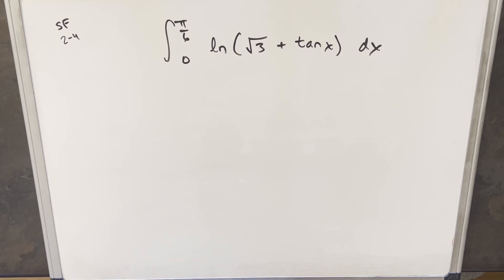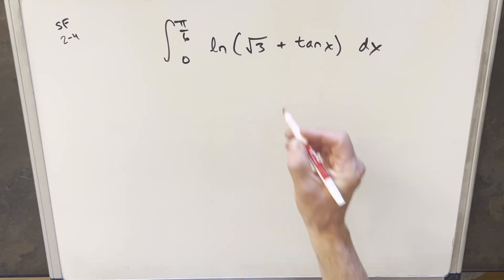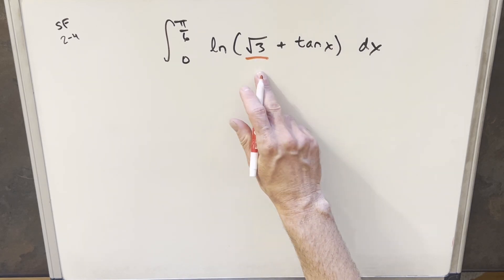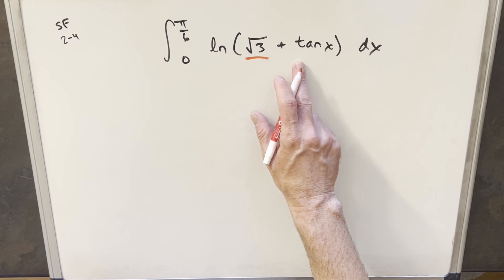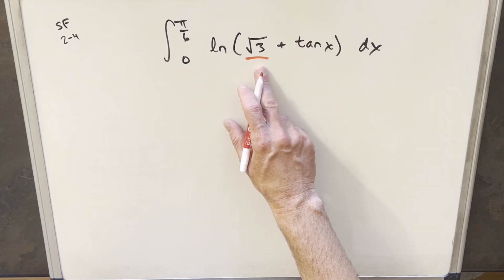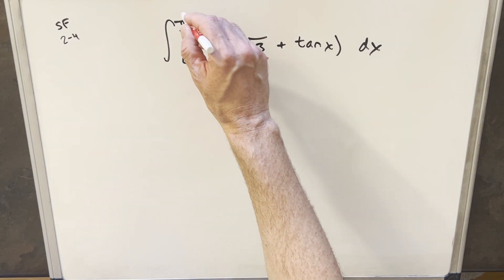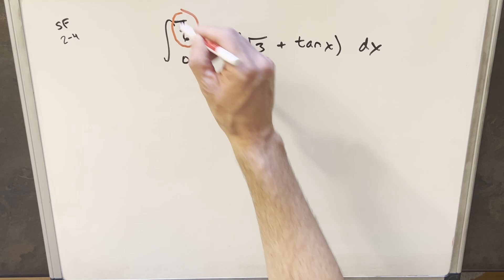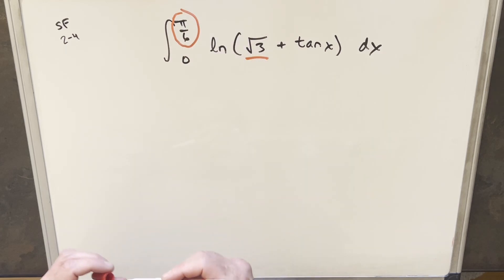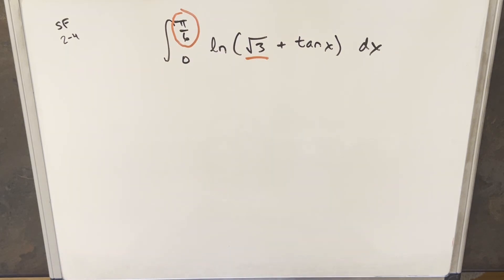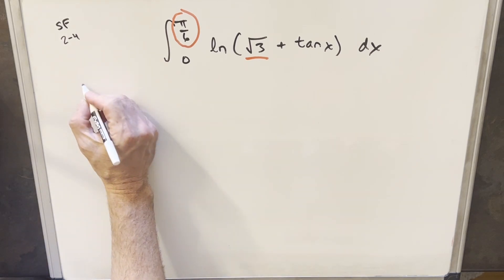The thing that really jumps out for me — I think I did a problem very similar to this a few months back. There are a few important differences: we have this square root of three here. Usually when you have a problem like this, it's just the trig function inside, not adding something else. Also, in my other problem the upper bound was pi over two. So I think these two things are going to make this problem just a little bit trickier.